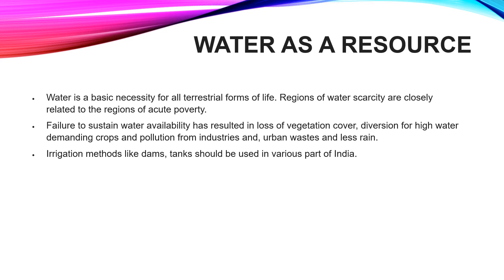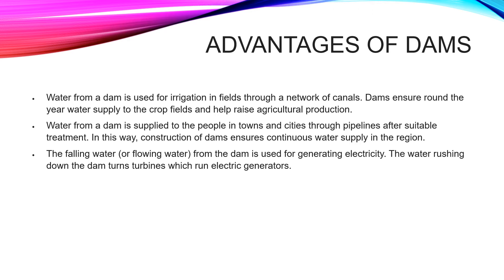Dams are big water storage structures. They are used so that water can be made available for irrigation through canals to areas where there is no water or no rain. These dams ensure a round-the-year water supply to crop fields and help raise agricultural production, so that throughout all 12 months water will be available and production will also be good.